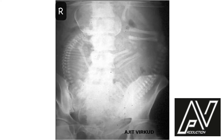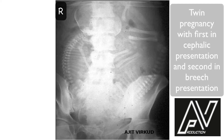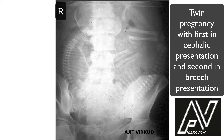This is a plain x-ray of the abdomen and pelvis, AP view, not well centralized, well exposed, showing two fetuses. The first twin is in longitudinal lie, flexed attitude, cephalic presentation with vertex as the presenting part. The second twin is in longitudinal lie, breech presentation with complete breech as the presenting part. The head of the second twin is well flexed. There is no discordancy in fetal size. There are no obvious fetal skeletal abnormalities. Therefore, my diagnosis is twin presentation with first twin in cephalic presentation and the second twin in breech presentation.